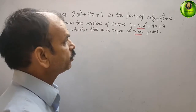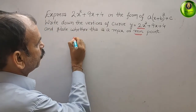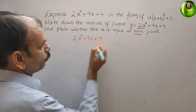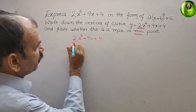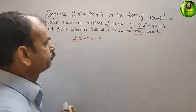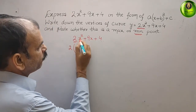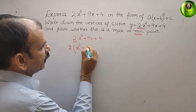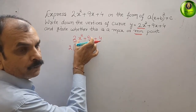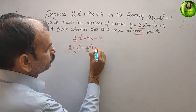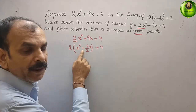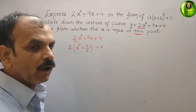Now we will work on this equation: 2x² + 9x + 4. The coefficient is 2, so we will take 2 as a common factor. After factoring out 2, you get 2 times (x² + 9/2 x) plus 4.